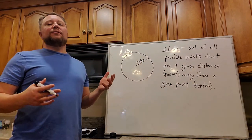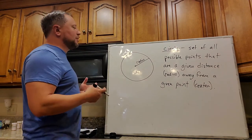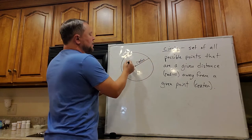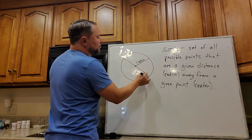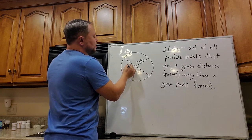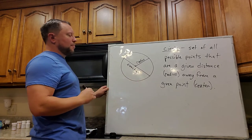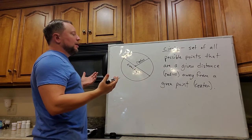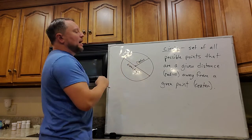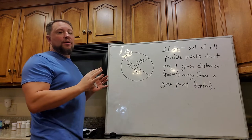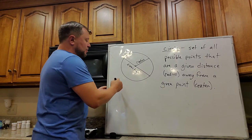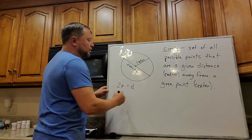So in this case, on my circle I've drawn here, here's that given distance known as the radius. So it's a set of all possible points that are a given distance away from a given point. As I mentioned earlier, that given point right there is known as the center of the circle. Of course, now there are other components to a circle as well that have special names. You may already know then, if this is a radius, then if I draw a segment that runs through that center point from edge to edge like this, that one is known as a diameter.